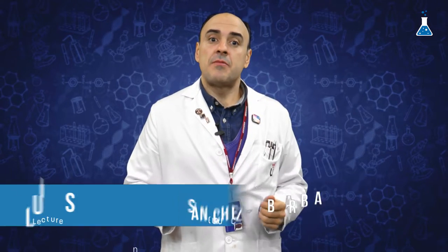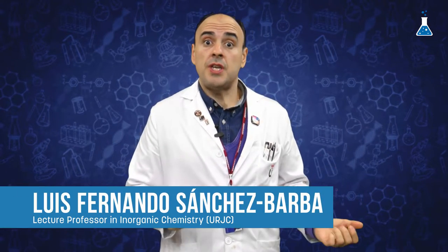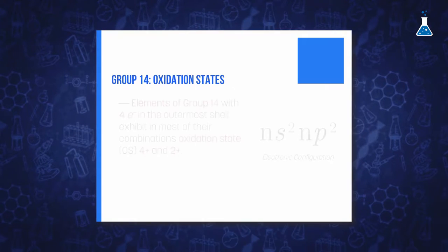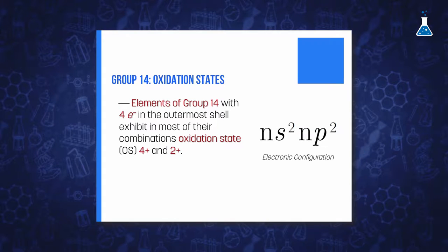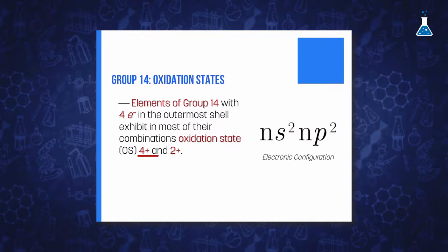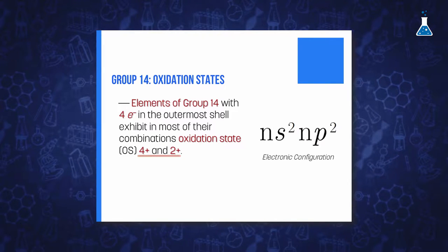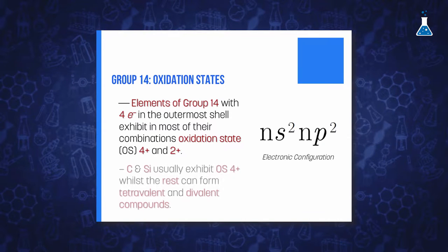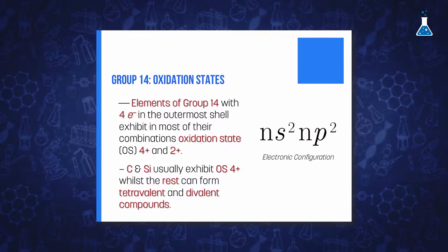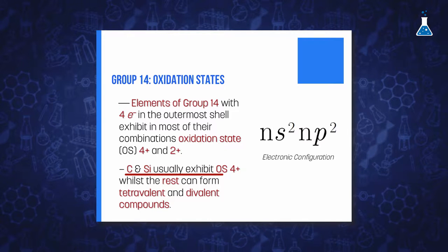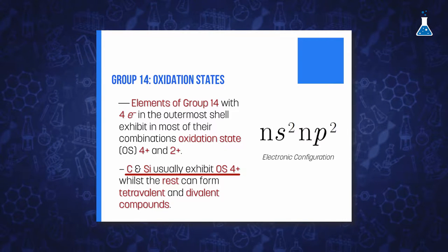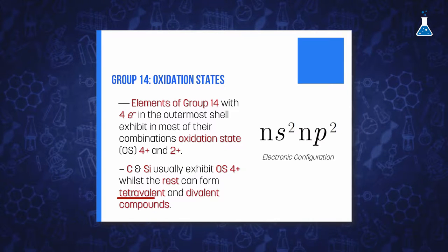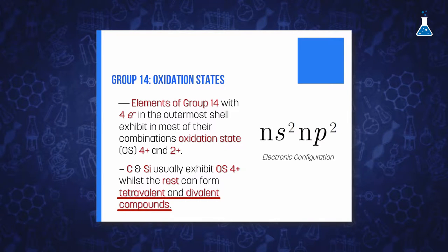As we have discussed, elements of group 14 have four electrons in the outer shell and they exhibit, in most of their combinations, oxidation states 2+ and 4+. The stability of these oxidation states varies as you move along the group, and whilst carbon and silicon usually exhibit oxidation state 4+, the rest of the elements form both tetravalent and divalent compounds.